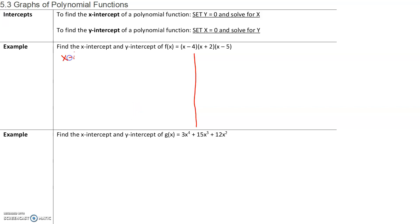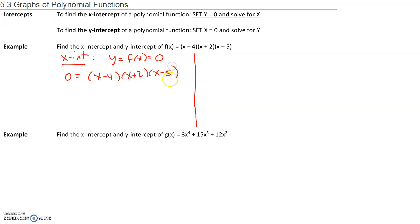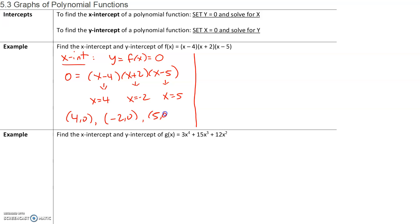To find the x-intercept, we need to set y — which is the same thing as f of x — equal to 0 and solve for x. So we set the entire left-hand side, f of x, equal to 0. We have 0 equals x minus 4 times x plus 2 times x minus 5. By the zero product property, the values of x are 4, negative 2, and positive 5. So our x-intercepts are (4, 0), (−2, 0), and (5, 0).